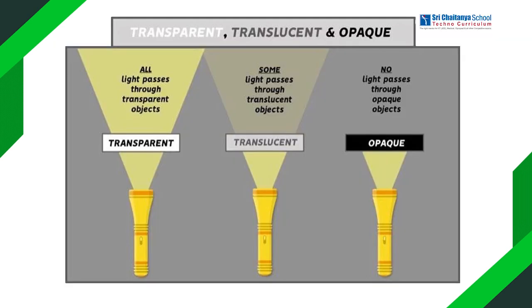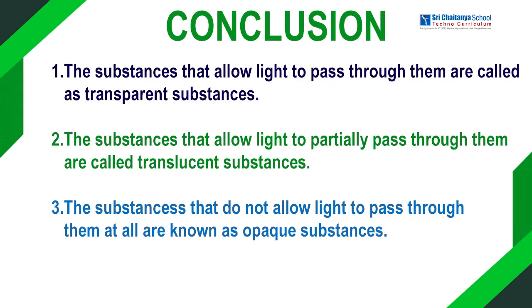And finally, conclusion. The substances that allow light to pass through them are called transparent substances. The substances that allow light to pass through them partially are called translucent substances. And the substances that do not allow light to pass through them at all are known as opaque substances. Based on this experiment, we can easily categorize all these objects into transparent, translucent and opaque substances.